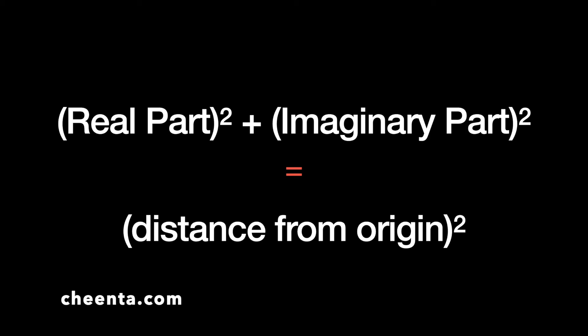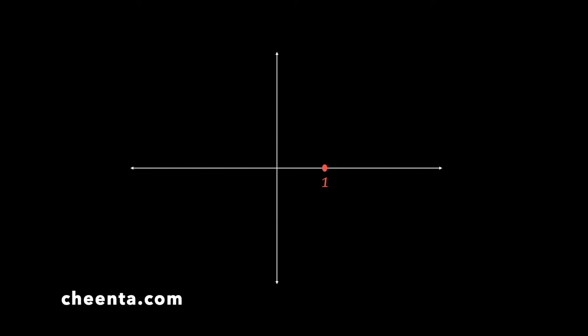You take the square of the real part plus the square of the imaginary part, and you have the square of the distance from the origin (0, 0). Let's draw a picture: mark the point 1 on the x-axis (i.e., (1, 0)) and the complex number i at (0, 1). The complex number 1 + i sits at (1, 1), and by simple Pythagoras its distance from the origin is √2.